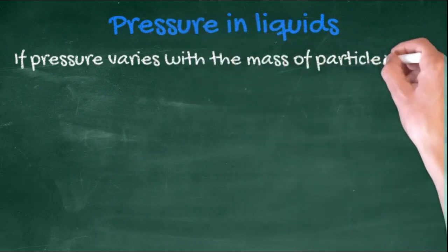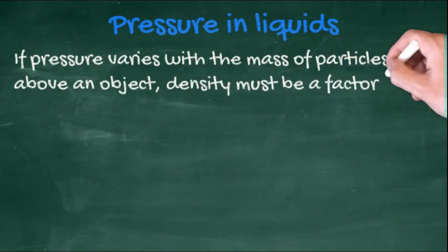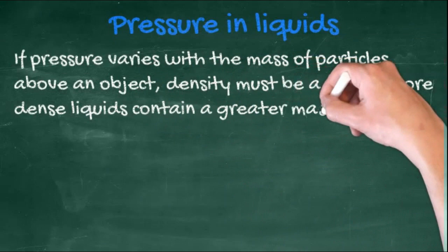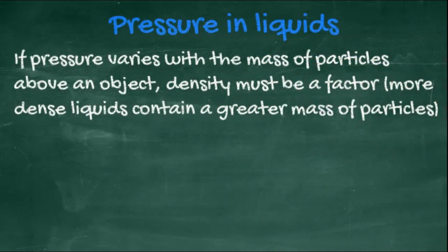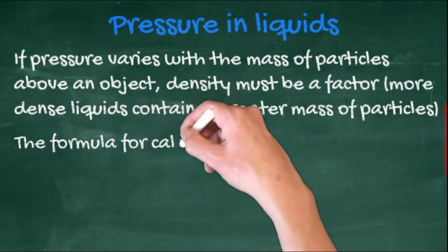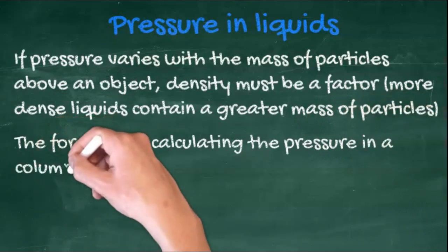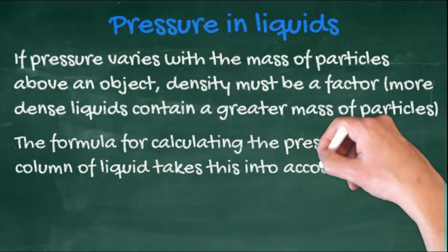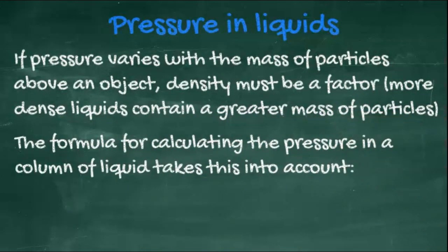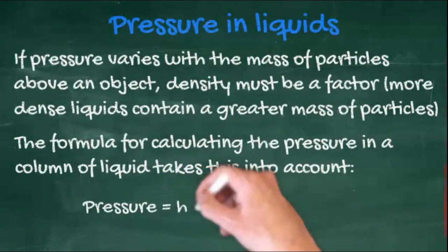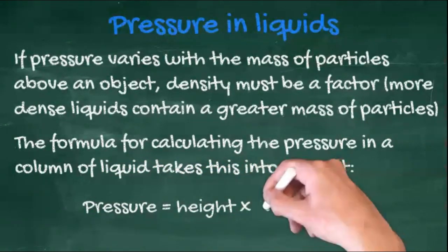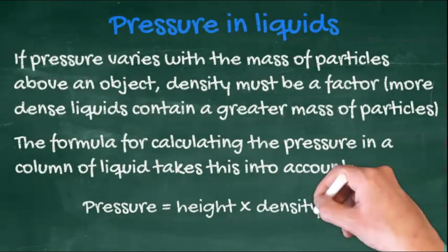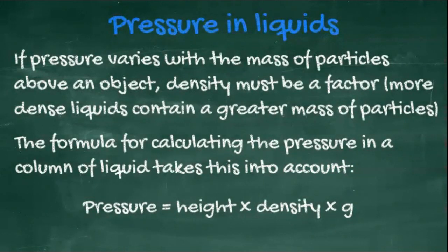Pressure in liquids. If pressure varies with the mass of particles above an object, density must be a factor. More dense liquids contain a greater mass of particles in the same volume. The formula for calculating the pressure in a column of liquid takes this into account. The pressure in a column of liquid is equal to the height times the density times gravitational field strength.